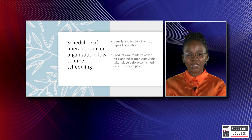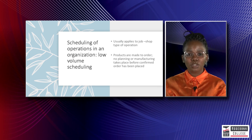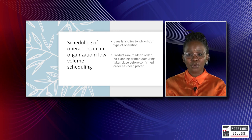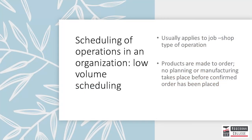Low-volume system scheduling usually applies to a job shop type of operation. Here, products are made to order, so no planning or manufacturing will take place before a confirmed order has been placed. Work does not start until a customer has sent the order through. An example is a shoe repair shop, where repairing a high heel with damaged buckles will differ from repairing a sneaker that needs stitching, with different processing requirements and types of materials required for each job.